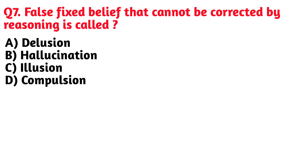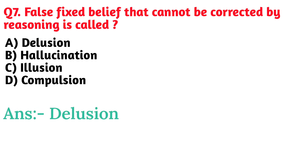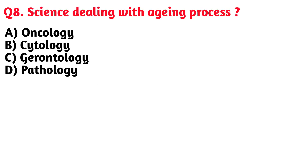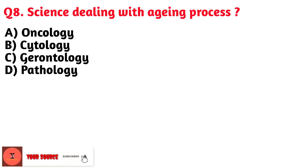Next question: False fixed belief that cannot be corrected by reasoning is called. Option A. Delusion is the correct answer.